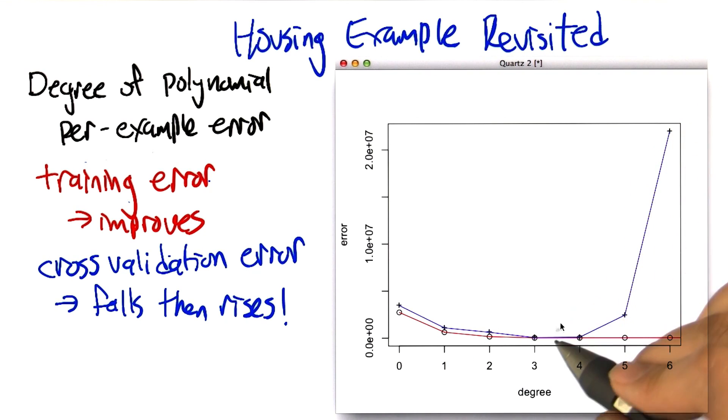And then what's really interesting is what happens now—we start to give it more ability to fit the data closer and closer. And by the time we get up to order six polynomial, even though the error on the training set is really low, the error on this cross validation error, the error that you're measuring by predicting the examples that you haven't seen, is really high.